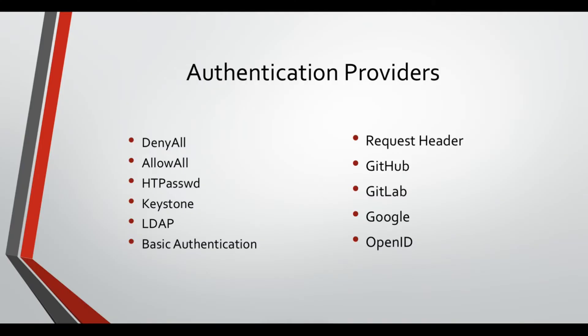So authentication providers for OpenShift environment - you have many options to choose from. Some of them are very basic like deny all and allow all, and some of them are more complex. Let's discuss each one of these and see what it's all about. When you set up an OpenShift enterprise environment, by default you get the deny all, so no one is allowed to access this environment.